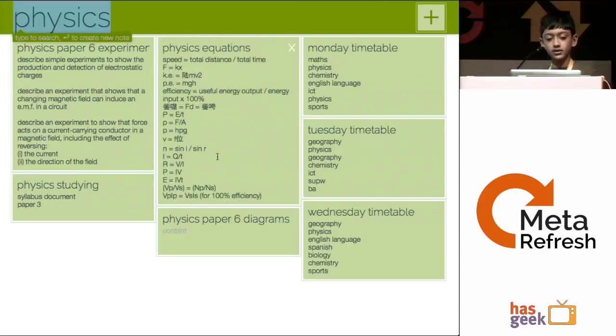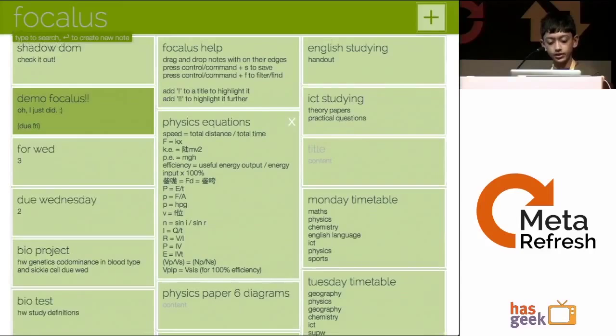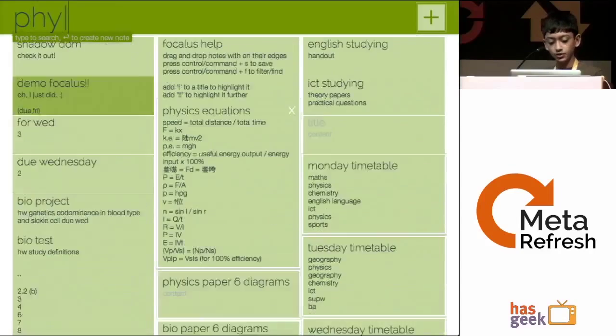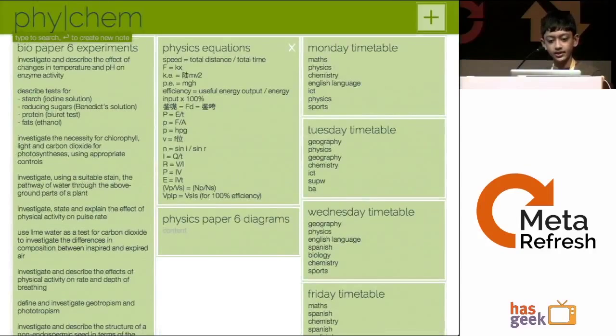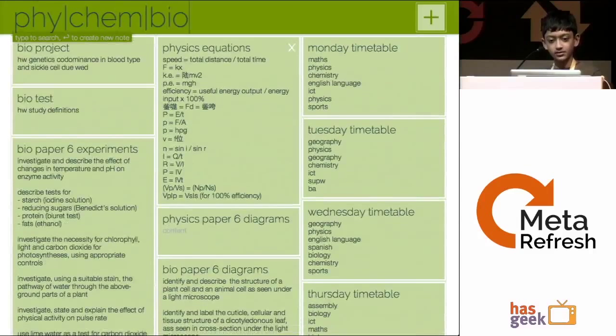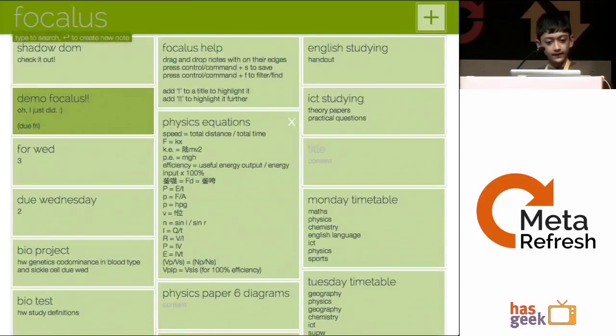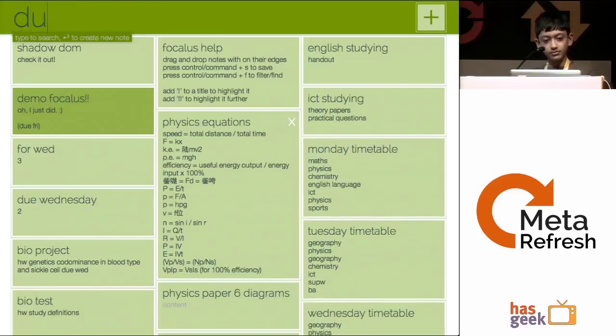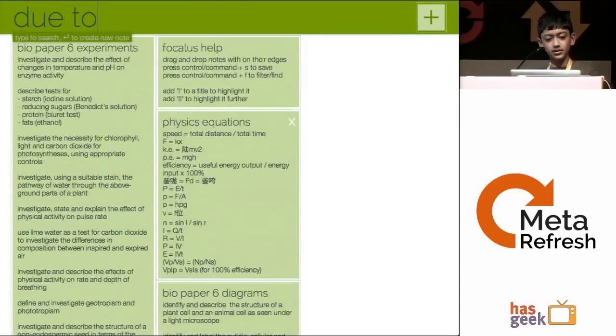So the whole point is it's a really fast way to go through your notes. And since this is full regex, I can see physics and chem and bio. Now there's also other stuff like some sort of smart stuff. So if I say do today,